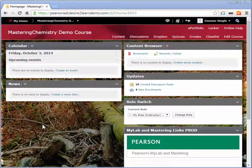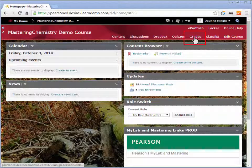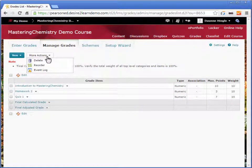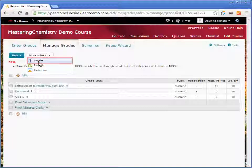In your Desire to Learn course, select grades from the course menu. Under manage grades, select more actions and delete.